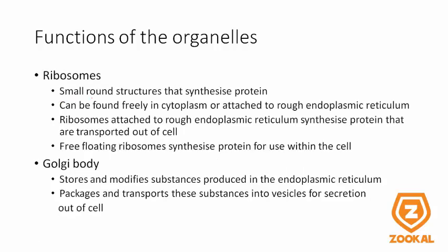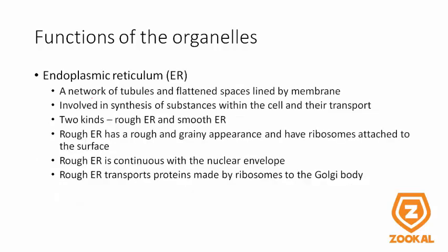The ribosomes are small round structures that synthesize or make protein. They can be found freely in the cytoplasm or can be attached to the rough endoplasmic reticulum. Ribosomes attached to the rough endoplasmic reticulum synthesize proteins that are transported out of the cell, while proteins synthesized by free-floating ribosomes are used within the cell. The Golgi body stores and modifies substances produced in the ER, and packages and transports these into vesicles for secretion out of the cell. The endoplasmic reticulum, or ER, is a network of tubules and flattened spaces lined by a membrane. It is involved in the synthesis of substances within the cell, as well as their transport.